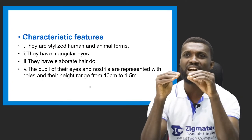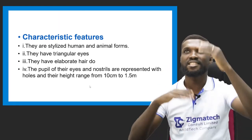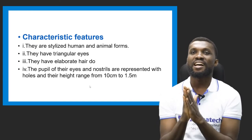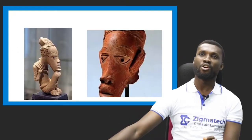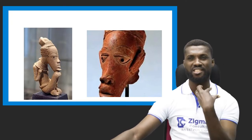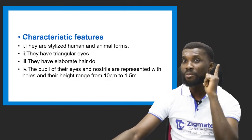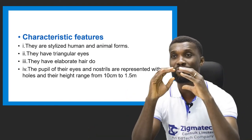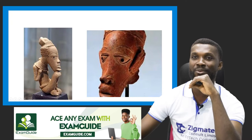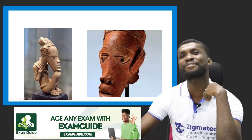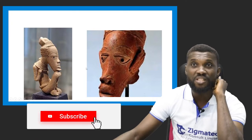These artworks range in height from 10 centimeters to 1.5 meters. These are the characteristic features of the Nok art. Now look at these images — observe how stylized the human figures are, and see the triangular eyes. Anytime you see an artwork with triangular eyes, know that it is Nok art. What will differentiate it completely is that the Nok art represents the pupils of the eyes with a hole — they pierce the eyes. The nose is also pierced.